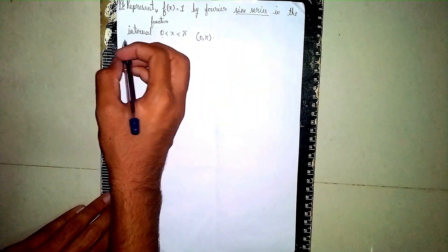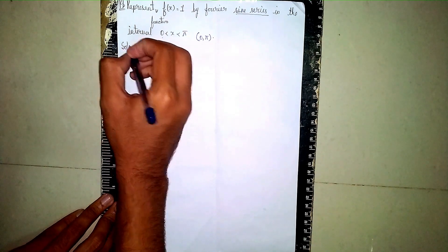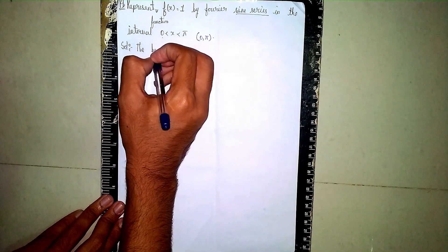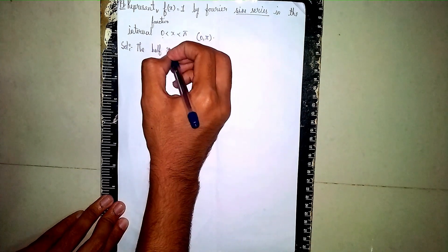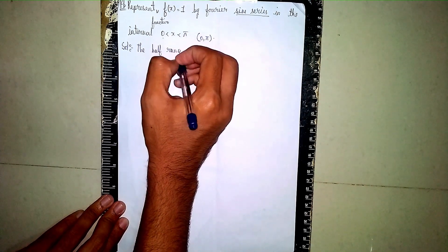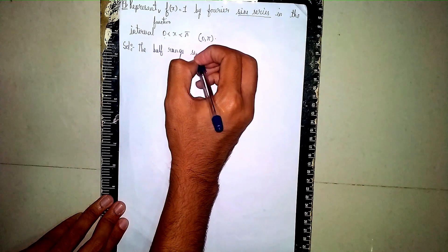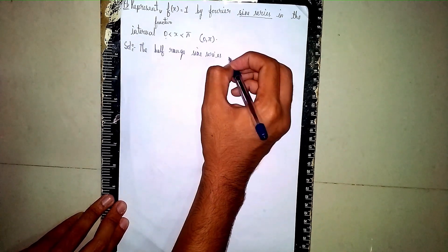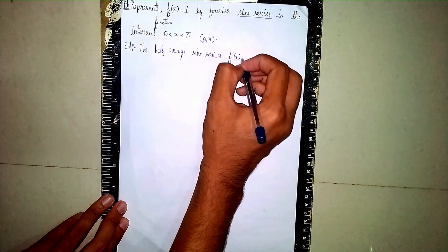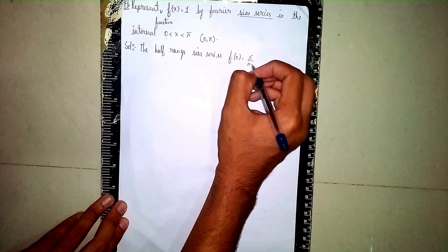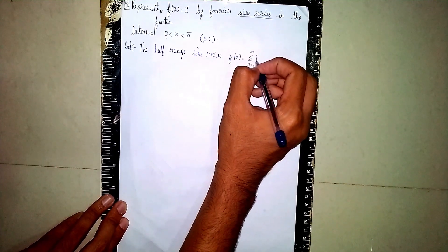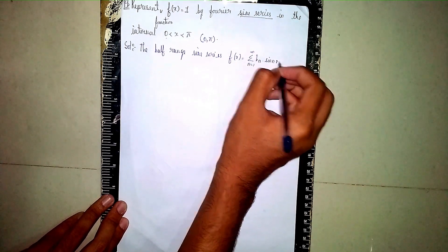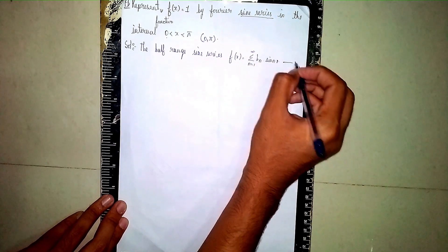First write the solution, then write the statement. The half-range sine series is: f(x) = summation from n=1 to infinity of b_n times sin(nx). Take this as equation 1.